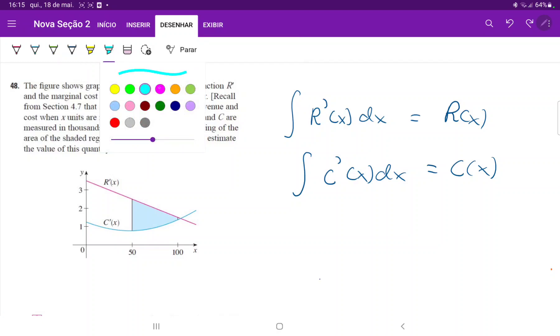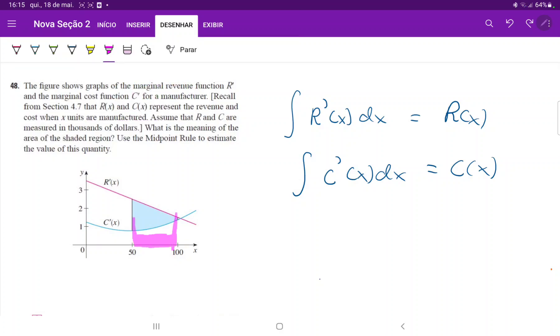So for this one, it is the area beneath the pink curve. And remember that the area beneath the pink curve is just the revenue, because the pink curve is the derivative.